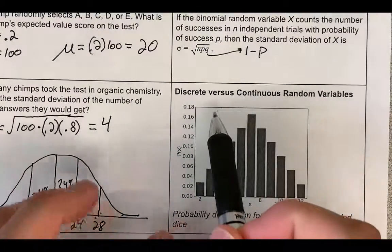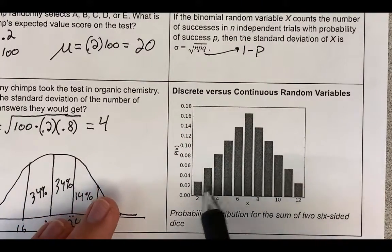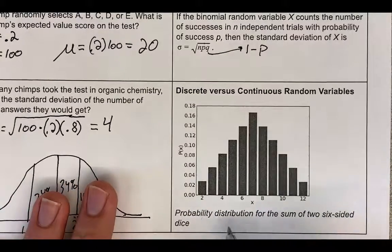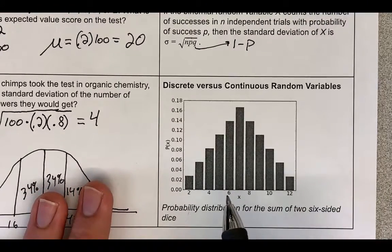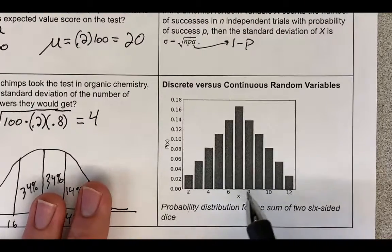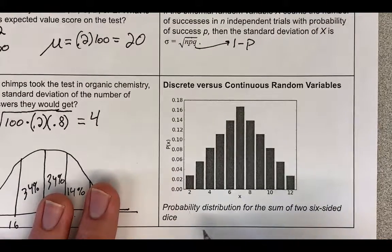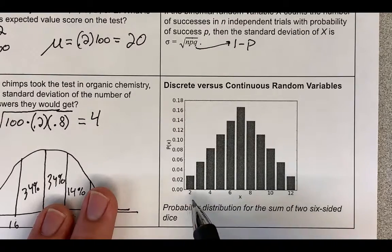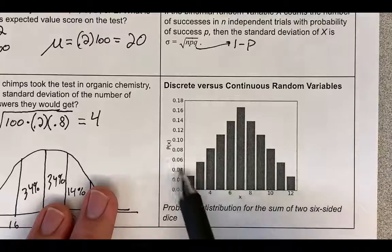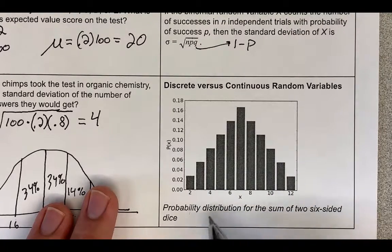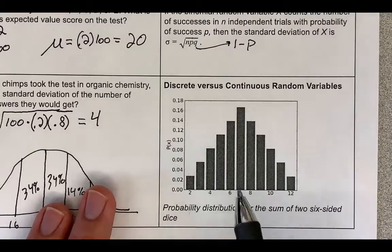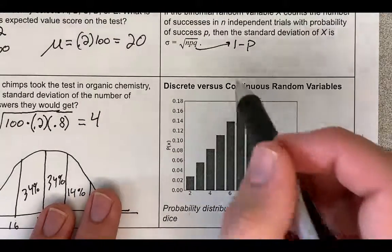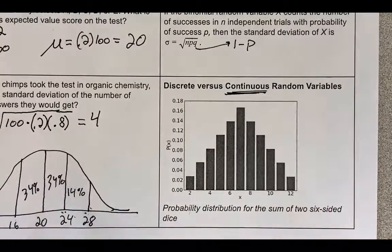The last topic today is discrete versus continuous random variables. Up until now, we've only talked about discrete random variables, meaning the values the random variable can take on are countable — distinct values like 1, 2, 3, 4 for free throws, or 1 through 6 for a die roll. The probability distribution of the sum of two six-sided dice is shown as an example. In the next lesson, we'll talk about continuous random variables.